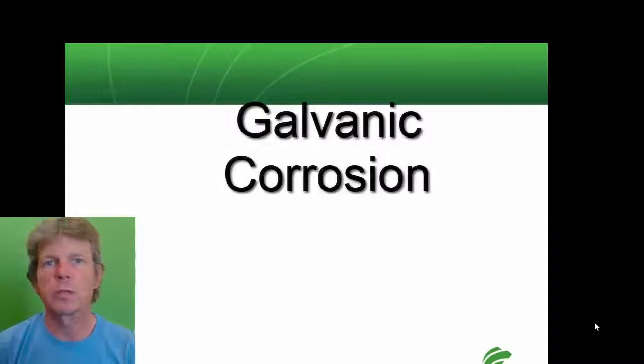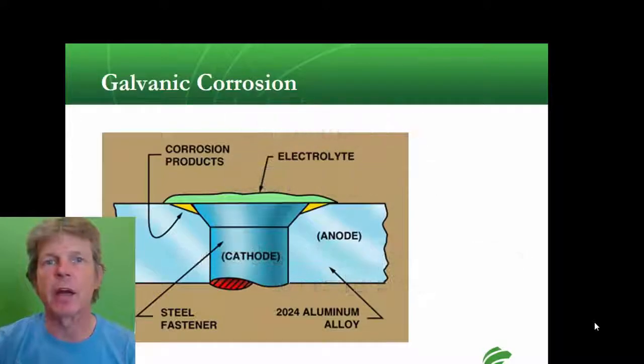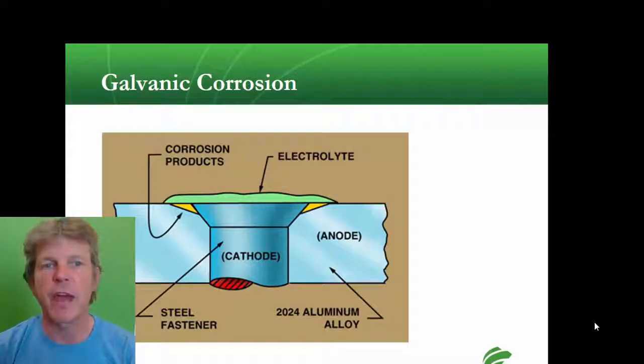Let's talk about how corrosion is formed, some of the mechanics behind corrosion. First we're going to talk about a biggie: galvanic corrosion. Here we have a picture from the FAA showing a steel fastener in a 2024 aluminum alloy sheet.